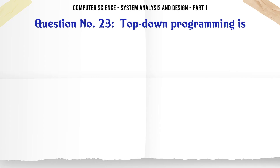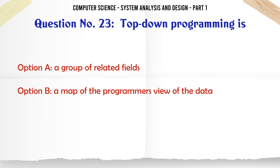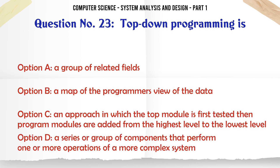Top-down programming is: A. A group of related fields. B. A map of the programmer's view of the data. C. An approach in which the top module is first tested, then program modules are added from the highest level to the lowest level.